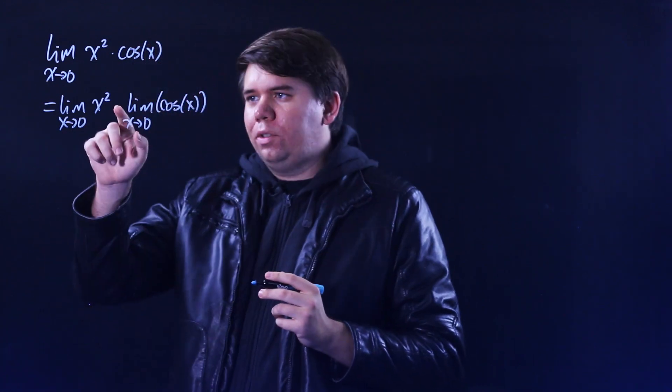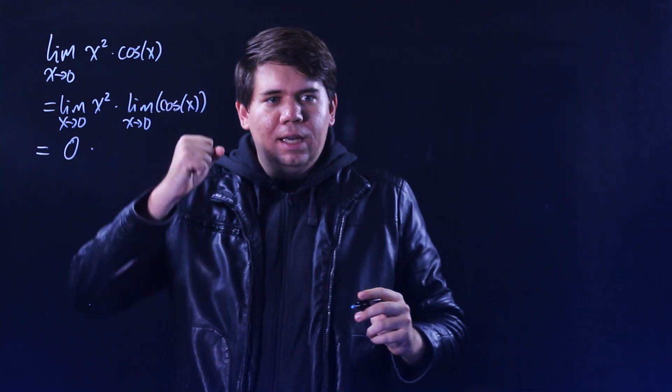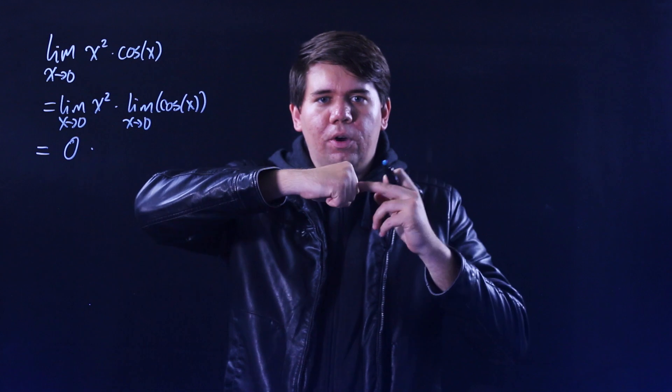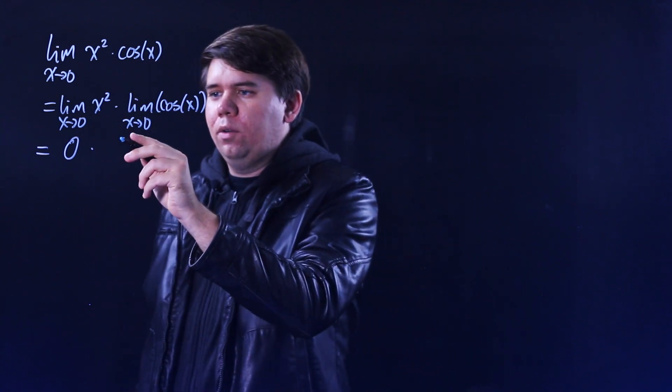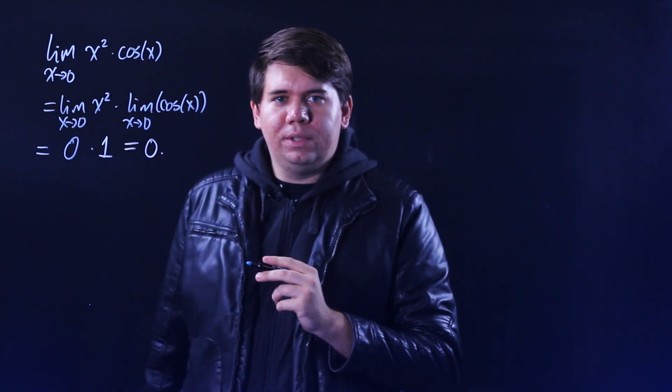Your x is going to go to zero, so x squared is also going to zero. And cosine of x, as my x goes to zero, cosine is at one. And so it's going to be zero times one, and so this will give you an overall limit of zero.